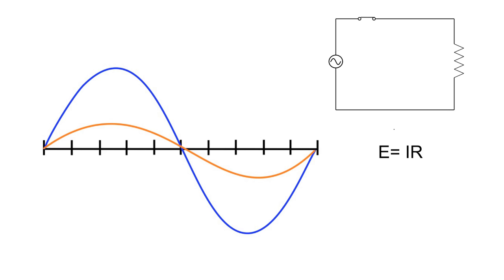Let's take a look at a purely resistive circuit first. In a purely resistive circuit, we're going to find that our voltage and our current are completely in phase with each other. Also, our source voltage is going to be the same as, or in phase with, the voltage across the resistor, because of the current through the resistor.